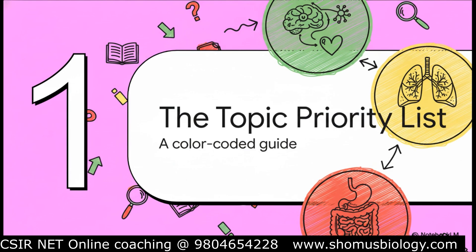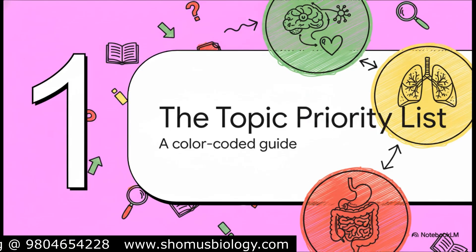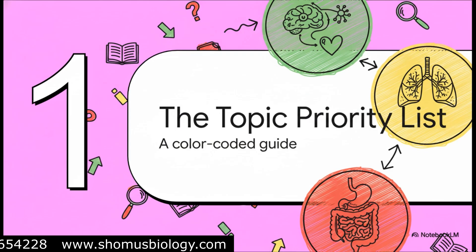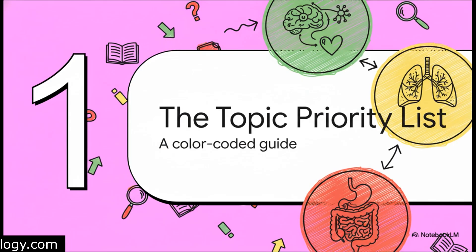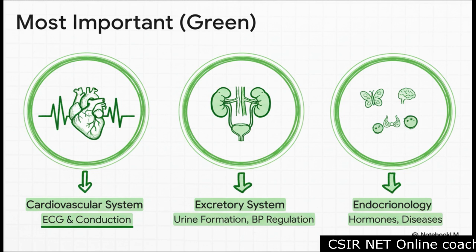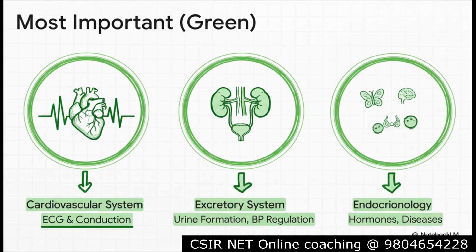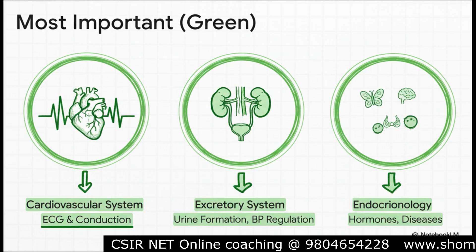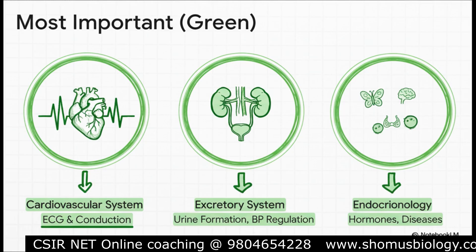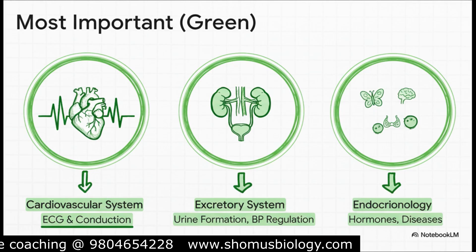We know it's human physiology, but that syllabus is still huge. To make this more manageable, we've crunched the numbers from past papers and broken the whole thing down into a super simple priority system. Green means you absolutely have to master it. Yellow means it's moderately important. And red? Those are the topics you can pretty much skim. These three systems are your absolute top priority: for the cardiovascular system, the examiners are obsessed with the electrical system — the ECG and conduction pathways. For the excretory system, it's all about how urine is actually formed and how that process regulates blood pressure. And with endocrinology, they love asking about specific hormones and the diseases they cause, so connect every hormone to its function and a potential disorder.